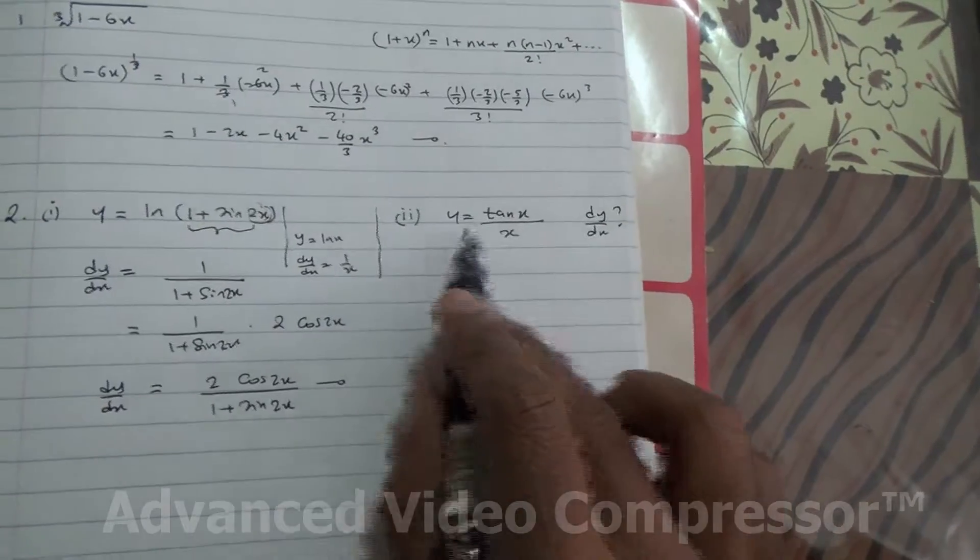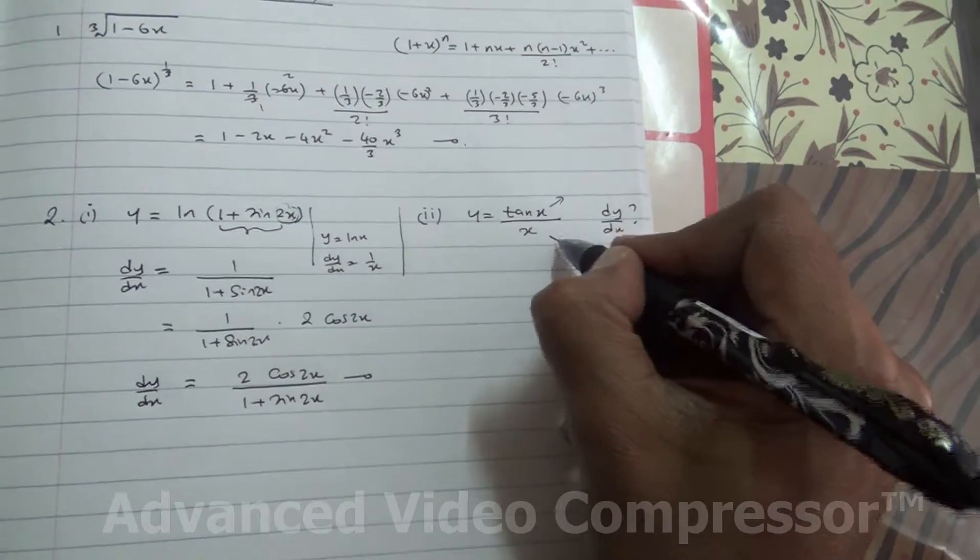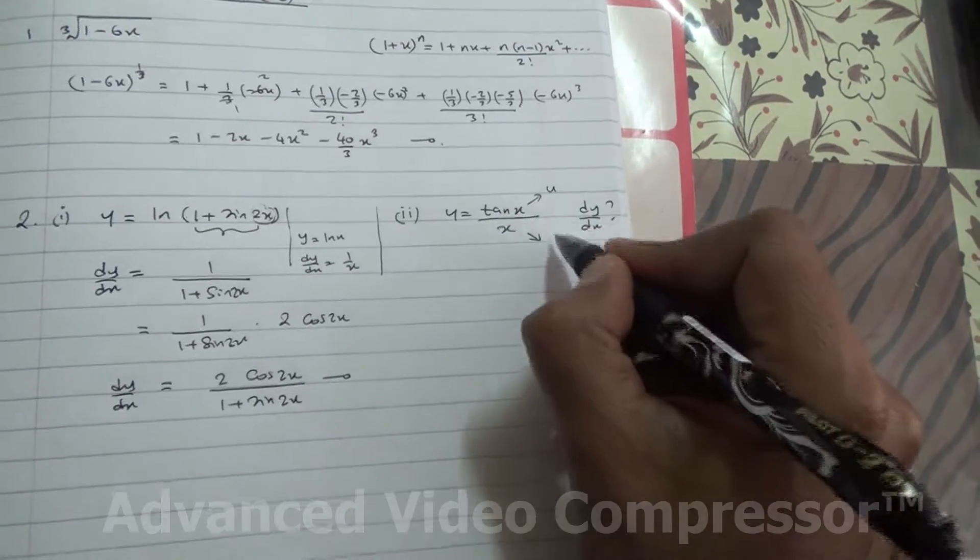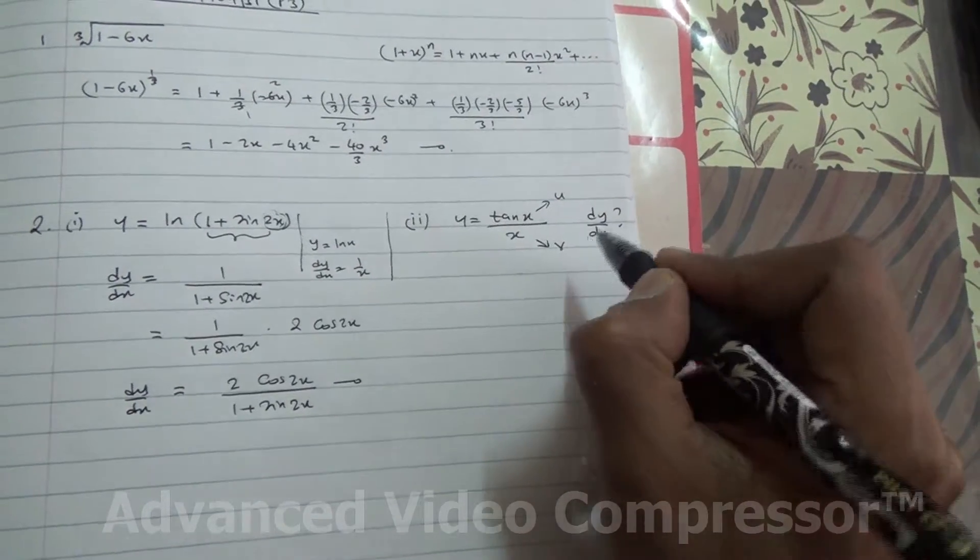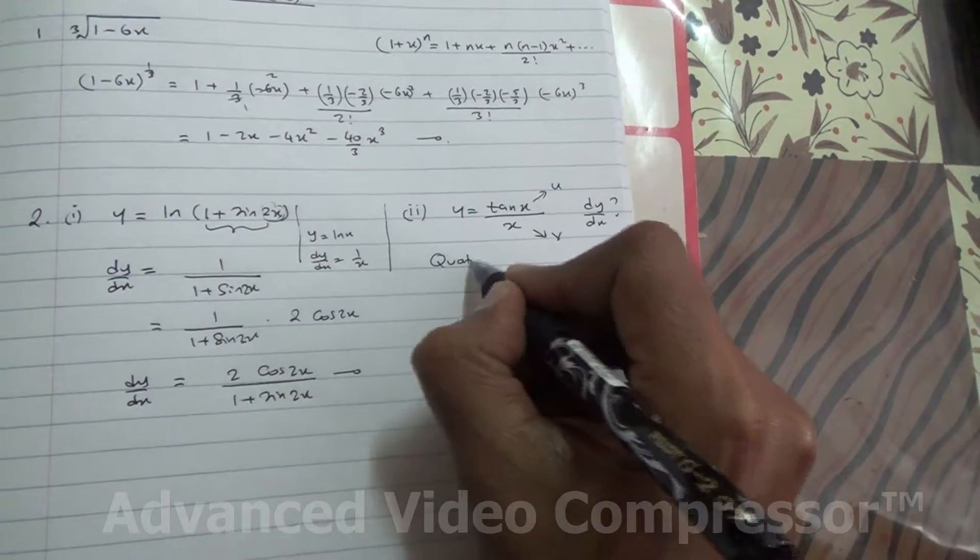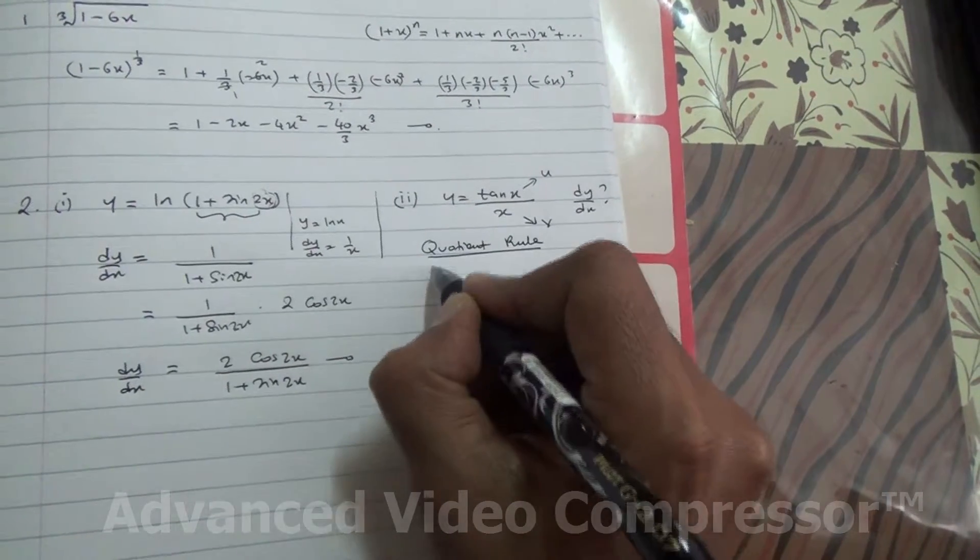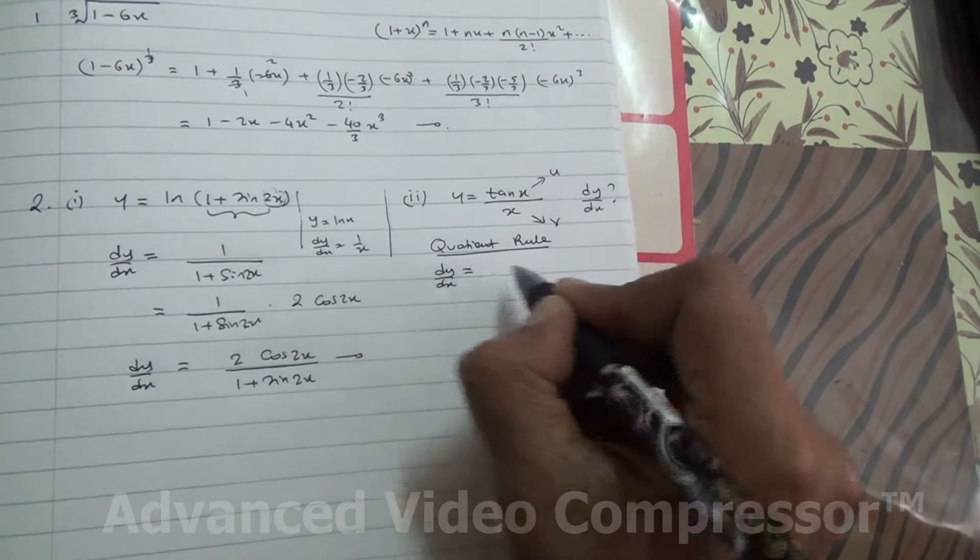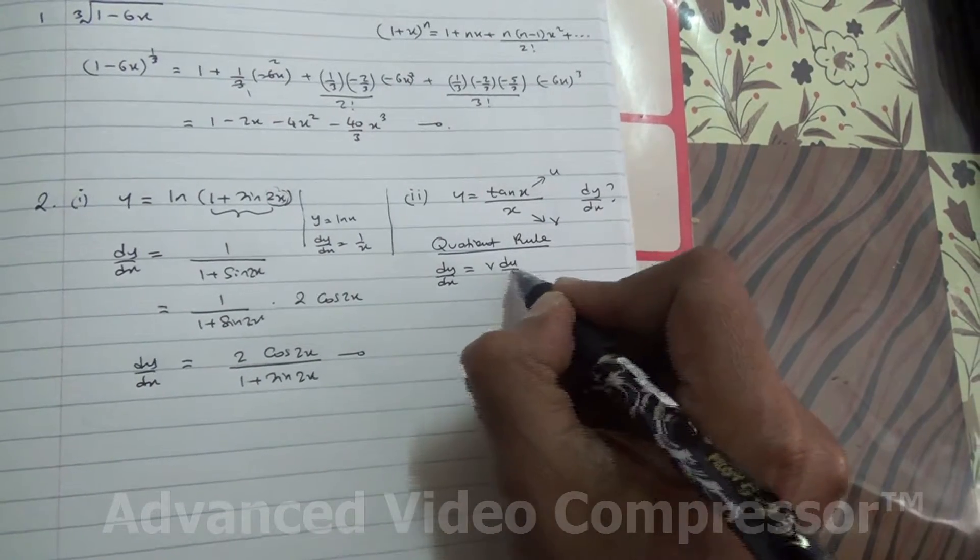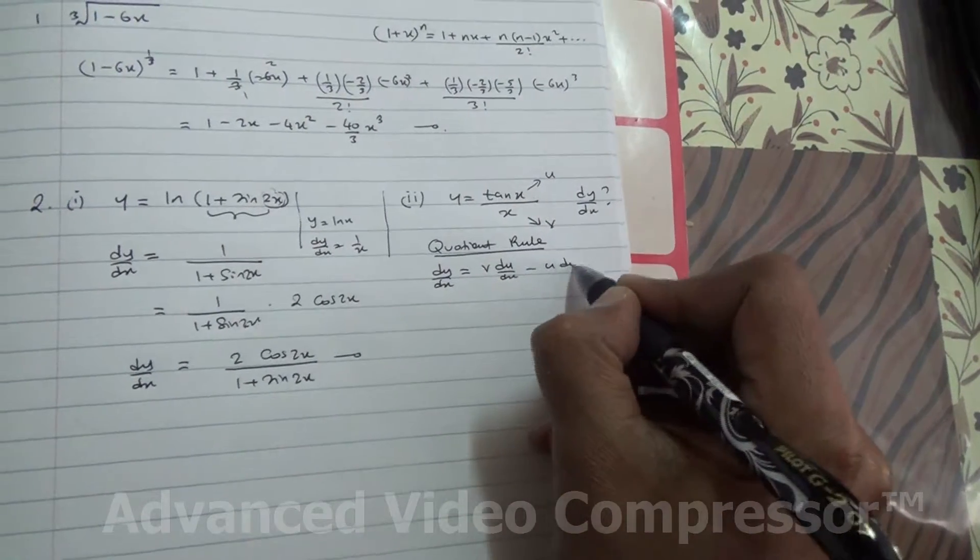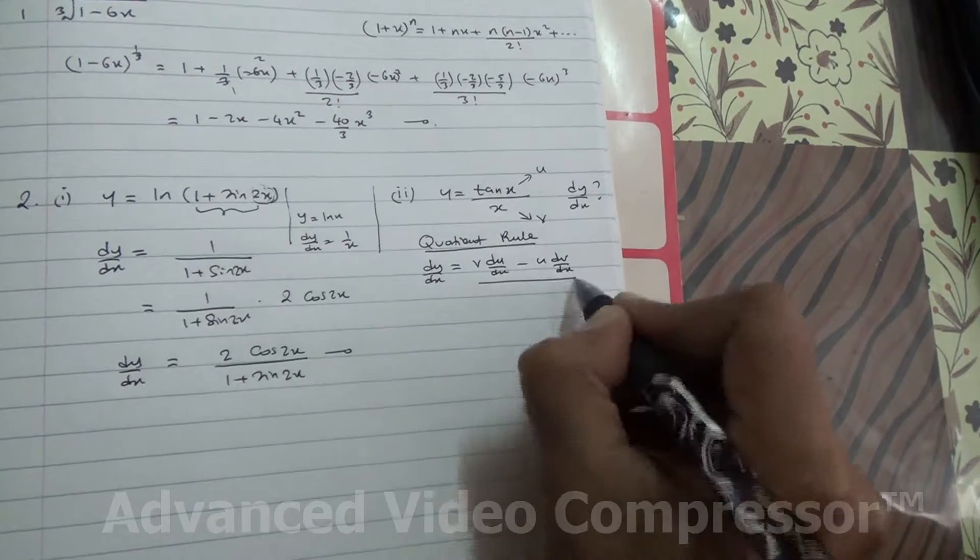For the second part, we can immediately recognize that this is going to be put as u, this is going to be put as v, and we can use the quotient rule. The quotient rule is such that dy by dx equals v du by dx minus u dv by dx, all over v square.